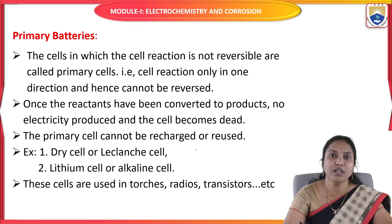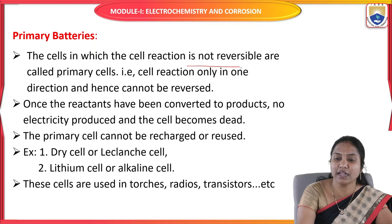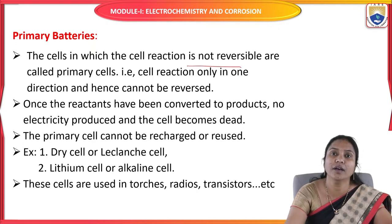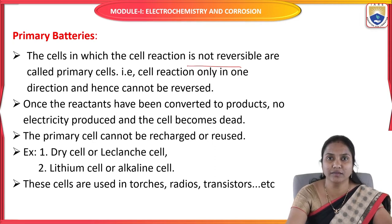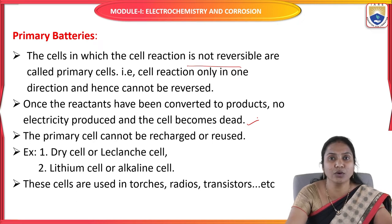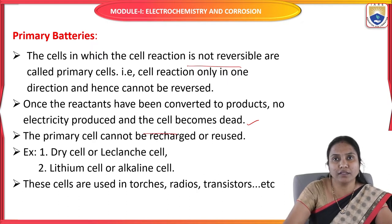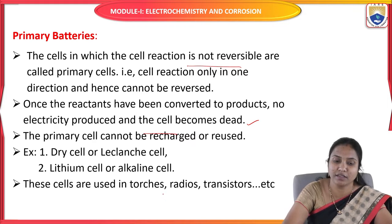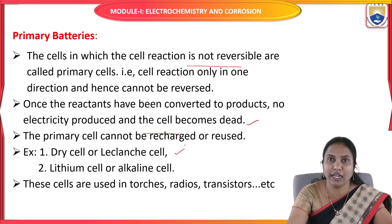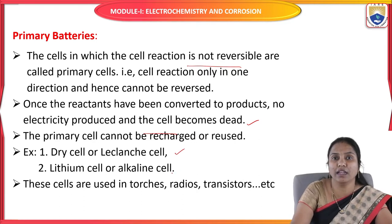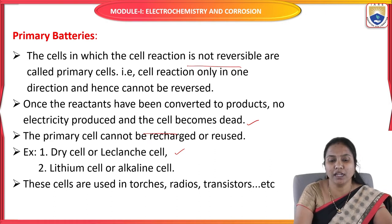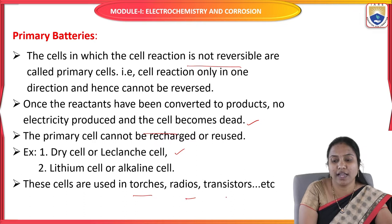Primary batteries are simply called use-and-throw batteries. Once the reactant converts to the product, there is no more electricity produced — it becomes dead. These primary cells cannot be recharged or reused. Best examples are dry cell or Leclanche cell, alkaline battery, and lithium battery. These are mainly used in torches, radios, and transistors.